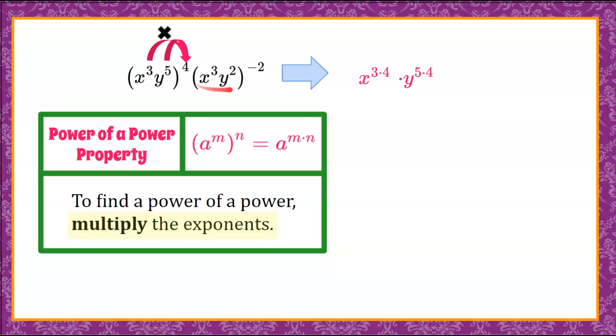Now we need to consider the second set of parentheses, and we're going to do the same thing. We're going to multiply the exponents because it's power to a power. So again, we have this base of x, and we're going to take the exponent 3 and multiply it by negative 2. And then our second term in the parentheses, y squared, we're going to take the 2 and multiply by the negative 2. Now we can simplify this.